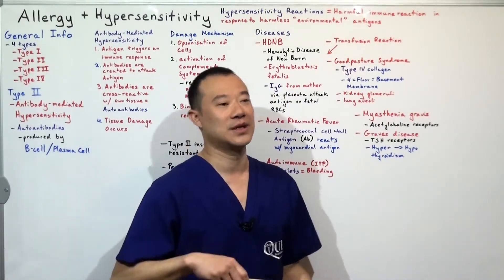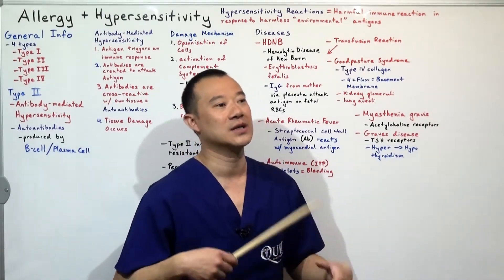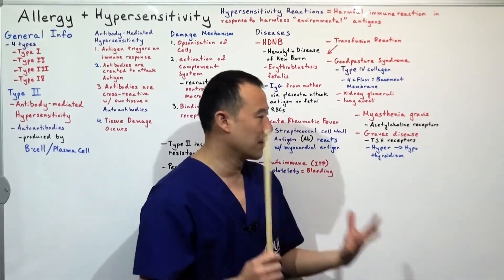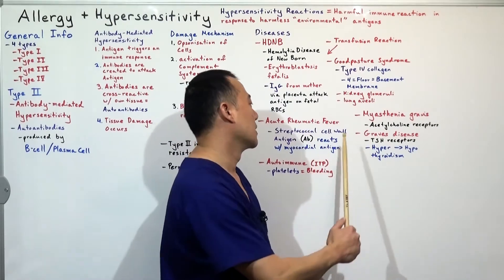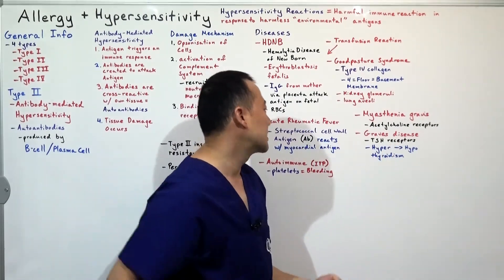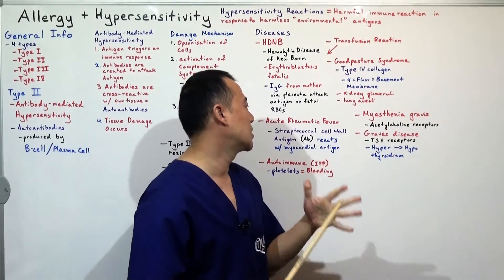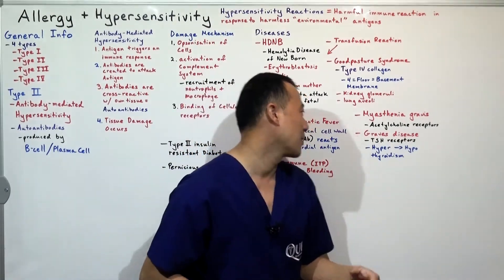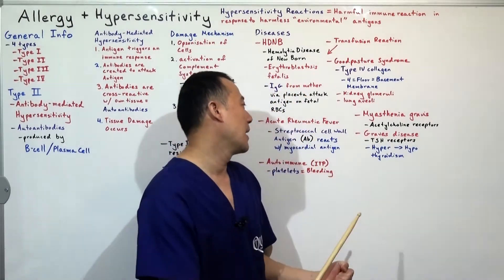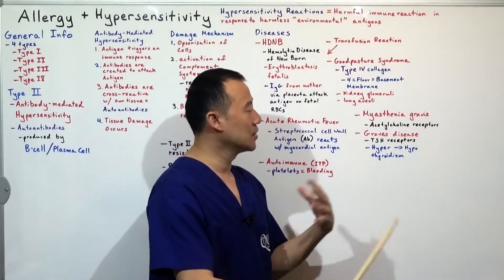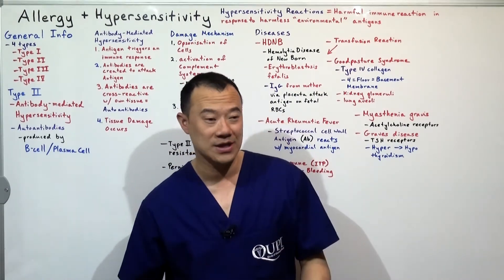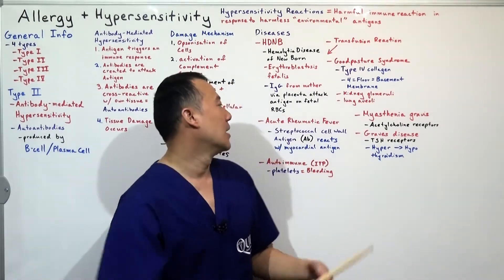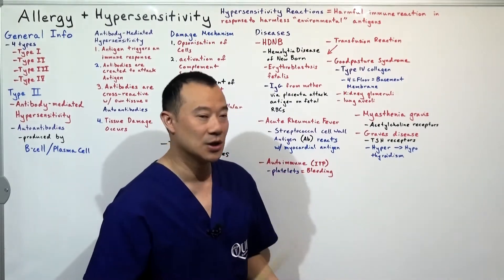Myasthenia gravis involves antibodies binding to acetylcholine receptors, so acetylcholine cannot bind, causing weak muscles — a very interesting disease, look it up. Graves disease involves TSH receptors — thyroid stimulating hormone receptors — and you initially start with hyperthyroidism, then end up with hypothyroidism.